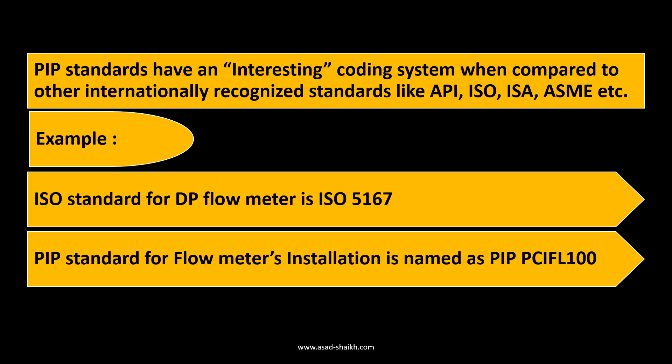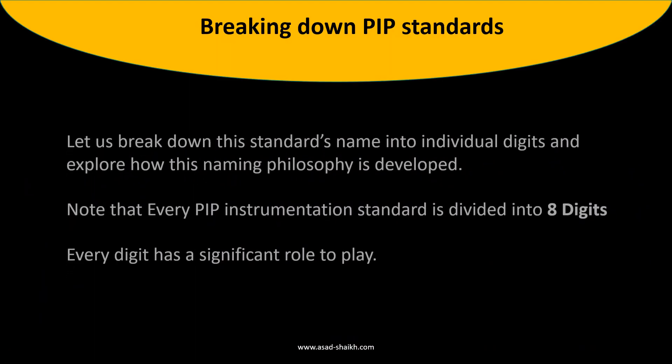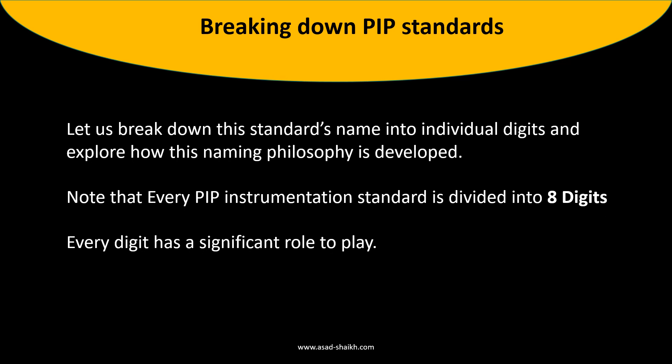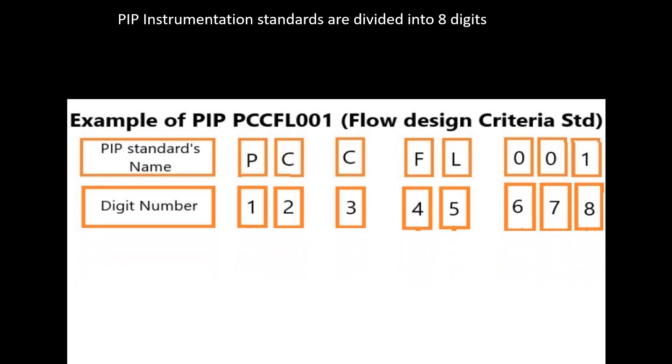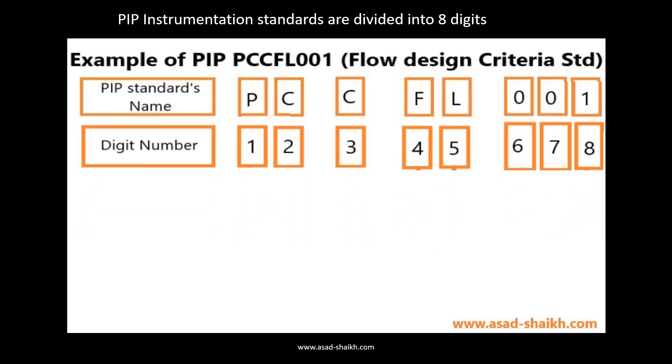Let's dig deeper into this. PIP standards are divided into eight digits, and every instrumentation PIP standard follows this structure. Each digit has an important role. To understand this, we'll use the example of PIP flow design criteria, a standard used to understand various flow meter technologies and which technology might suit a given application.